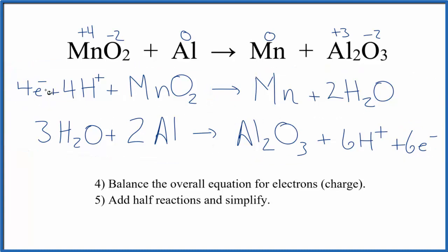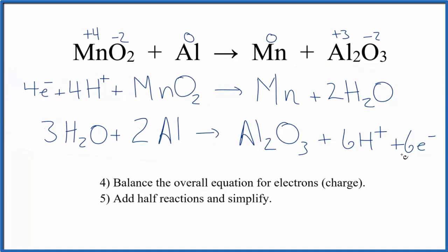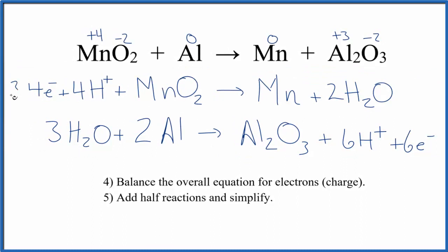We can do that. We know that four goes into 12 and six goes into 12. So if we multiplied all of this by three and all of this by two,